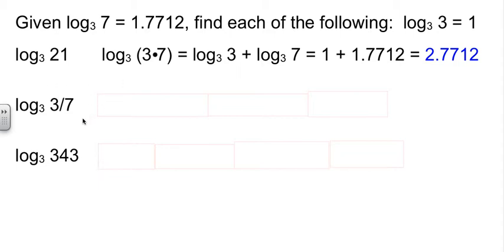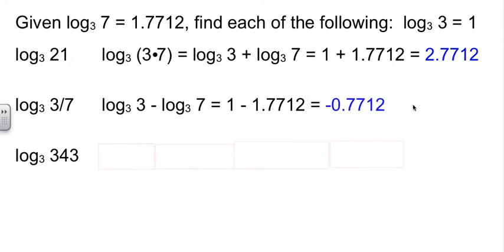Let's tangle with our second example. We have log base 3 of 3 sevenths. Well, 3 sevenths, that's a quotient. Since it's a quotient, we can separate it as a subtraction problem. So log base 3 of 3 minus log base 3 of 7. We know values for log base 3 of 3 and log base 3 of 7. So we'll substitute those in, and then a little subtraction gives me negative 0.7712.